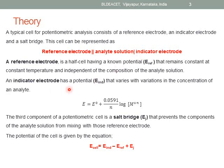Whereas the potential of the indicator electrode varies with variations in the concentration of the analyte. As seen here with respect to the indicator electrode, E equals E⁰ plus 0.0591 divided by n, times the log of metal ion concentration. If there is a variation in the metal ion concentration, then there is a variation in the indicator electrode potential.